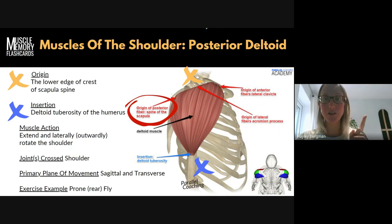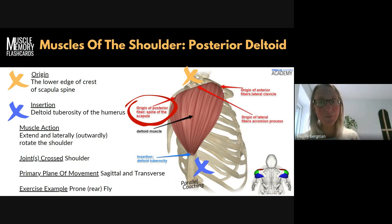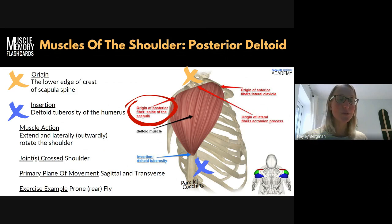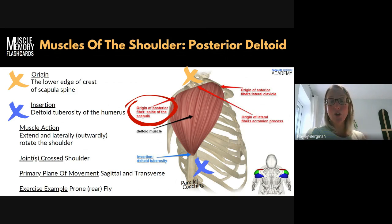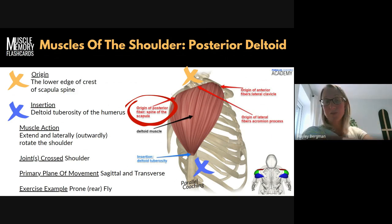Let's go straight on to the posterior deltoid, because it's the opposing muscle — everything we just learned gets reversed, which will help. Again, on the flashcard you've got the origin indicated by the orange cross at the top, and the blue cross for the insertion. The insertion is the same for the posterior deltoid as for the anterior deltoid: the deltoid tuberosity of the humerus. We already knew that. The origin, however, is different — it's on the other side, behind us.